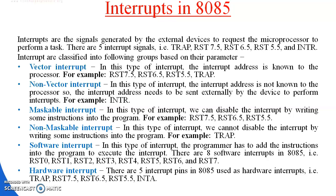Next are maskable interrupts. In this type of interrupt, we can disable the interrupt by writing instructions into the program. For example, RST7.5, RST6.5, RST5.5, and INTR — these interrupts are known as maskable interrupts and are disabled by writing instructions into the program.